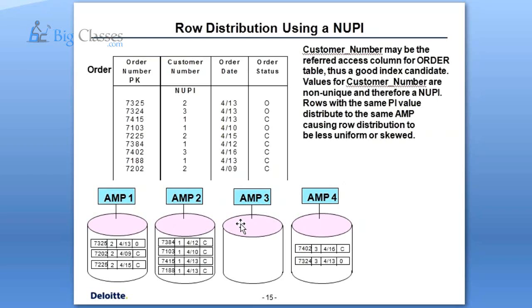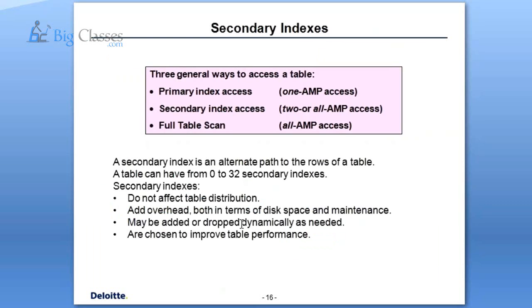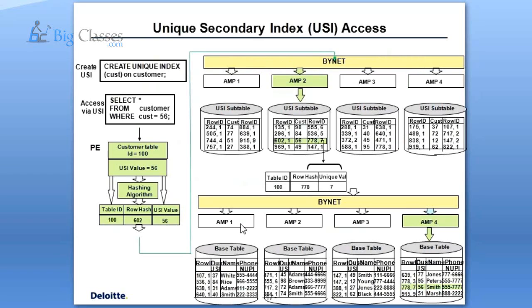This is all background processing — as an application developer you won't see all this, but it is an important theoretical concept. When you write your query, you don't find the difference between a unique and non-unique primary index because it is a single AMP operation. Whenever you use a WHERE condition where the primary index column equals something, it will always be a single AMP operation. Secondary index is a little different — it uses a two-AMP operation. Secondary index is useful once you create the primary index; it is another column choice to increase performance when you have to put more conditions in queries. You can create secondary indexes dynamically as and when required, whereas primary indexes cannot be altered after table creation.